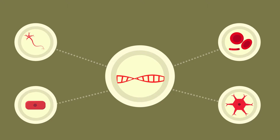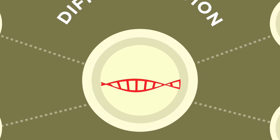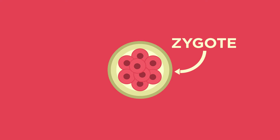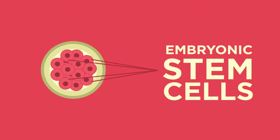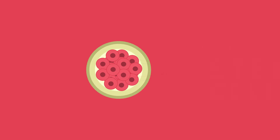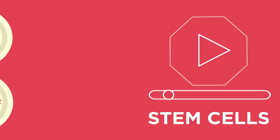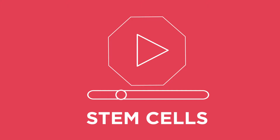The answer lies with differentiation. You were once a fertilised egg, a single cell called a zygote which became a ball of cells through cell division. These identical unspecialised cells are known as embryonic stem cells. Embryonic stem cells have the ability to become any type of cell in the organism.